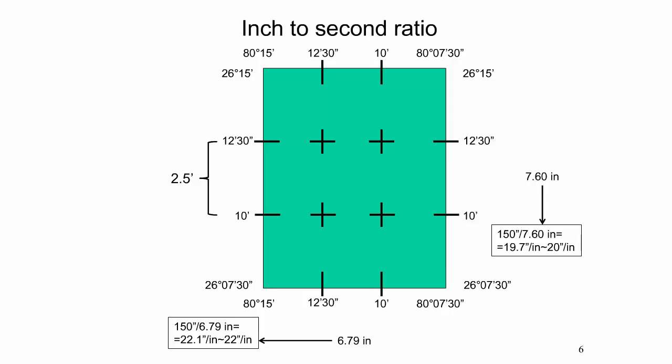To find coordinates for a point between Graticule lines, one must find the inch-to-second ratio, which describes the number of seconds of latitude and longitude per inch measured on the map. This must be determined separately for latitude and longitude, but only once per quadrangle. When measuring 7.6 inches between two adjacent tick marks in latitude, this gives 20 seconds of latitude per inch. The same approach gives 22 seconds of longitude per inch.